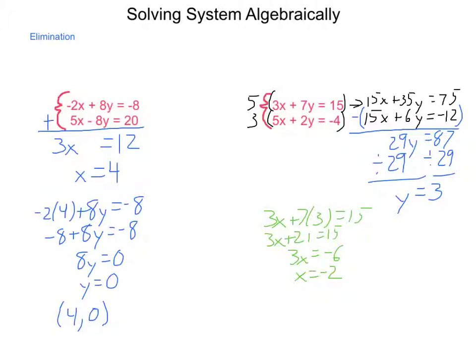Now let's do this as a talk-through to check it. 5 times -2 is -10. 2 times 3 is 6. -10 + 6 is -4. So my solution to this system of equations is (-2, 3).